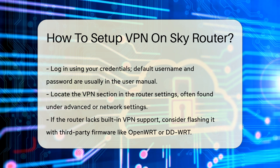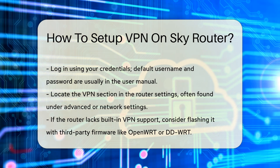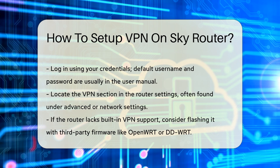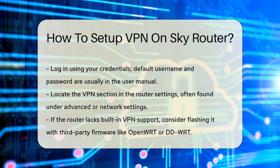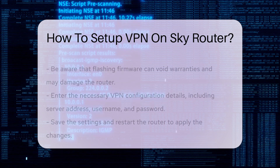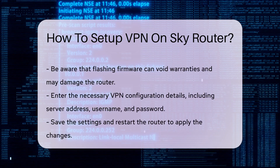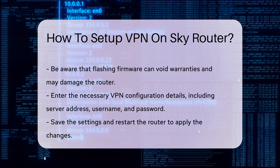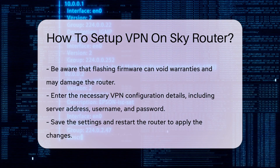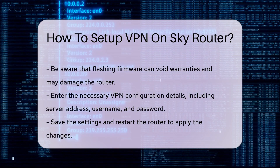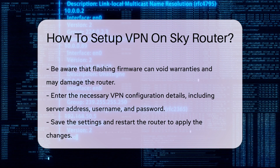If your router does not have built-in VPN support, you may need to flash it with third-party firmware like OpenWRT or DDWRT. Ensure you understand the risks associated with flashing firmware, as it can void warranties and potentially damage the router.